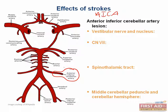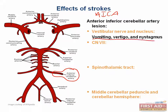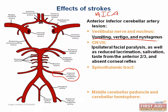What symptoms would you expect from these lesions? With the vestibular nerve and nucleus, you can expect this triad: vomiting, vertigo, and nystagmus. Cranial nerve 7, the facial nerve — you can expect facial paralysis, reduced salivation, lacrimation, and taste from the anterior two-thirds of the tongue, as well as an absent corneal reflex. The corneal reflex is actually a very good test for cranial nerve 7, and so you should try to remember that.